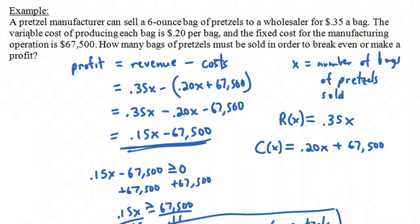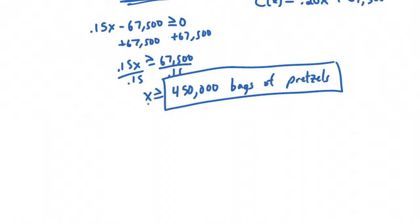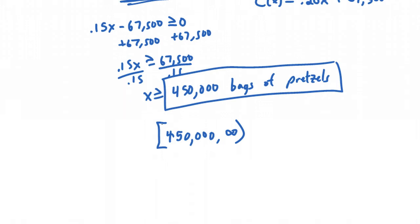Finally, I did an example in another video about a pretzel manufacturer. I worked out the problem and got that x has to be greater than or equal to 450,000 bags of pretzels, but forgot to put the answer in interval notation. To say x is greater than or equal to 450,000, we'd write the interval from 450,000 all the way up to infinity, closed at 450,000. If MyMathLab says to put your final answer in interval notation, this is what it would be.